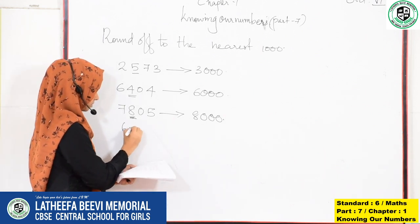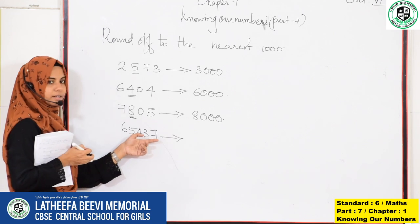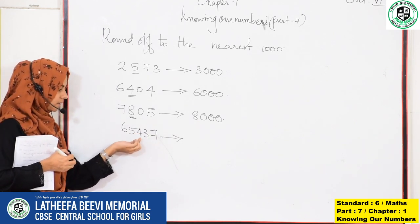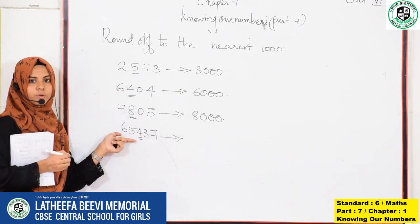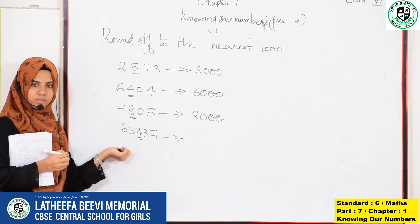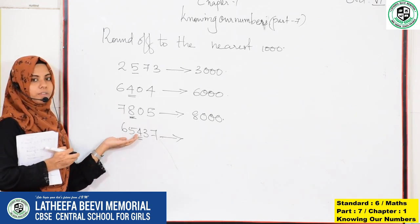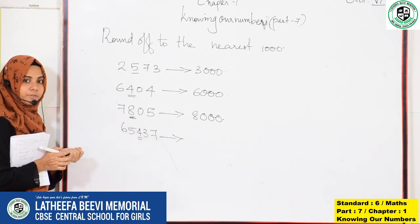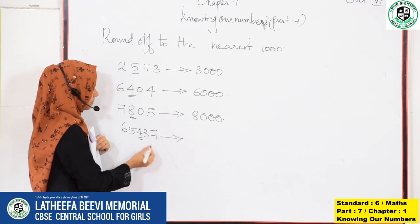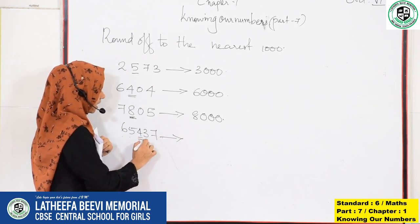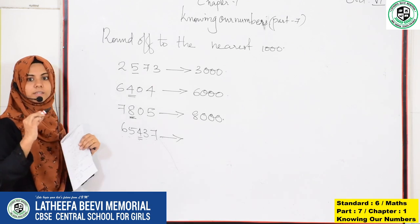Moving to the next example: 65,437. We look at the 100th place. Here it is 4. We know that 4 is less than 5, so we want to round off the number to the smallest nearest thousand. 65,437 is in between 65,000 and 66,000, so we round off to 65,000.